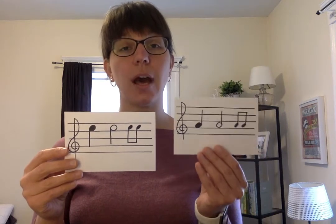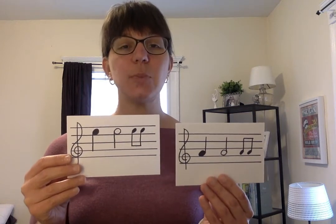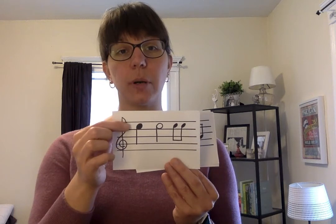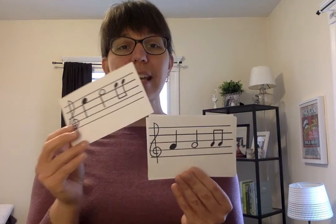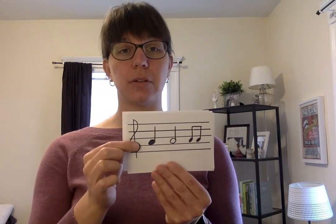Our next string on the violin is open A. A is also a space note and is in the word FACE. So, F, A — our open A is the second space. Notice how the stem of the A is going up and the stem of the E is going down. That is because the note head, or the circle part of the note, is above the middle line. For the A, it's below the middle line.